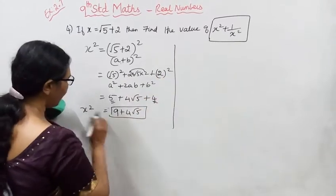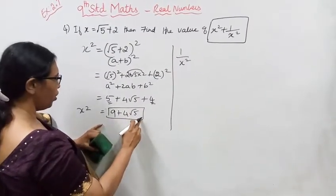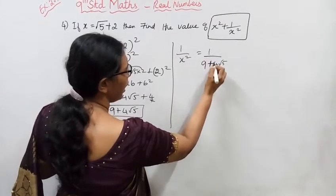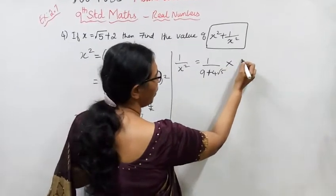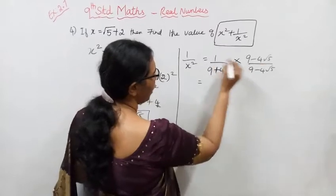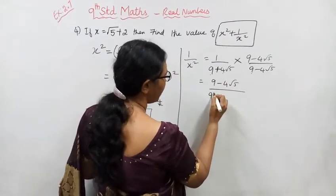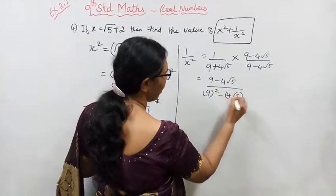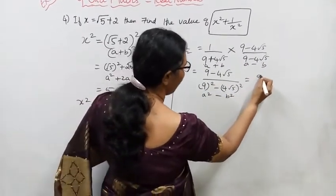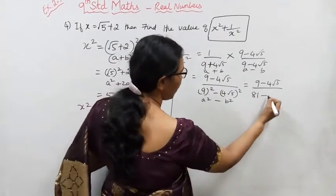Now for 1/x². We have 1/x² = 1/(9 + 4√5). To rationalize, multiply numerator and denominator by the conjugate: (9 - 4√5)/(9 - 4√5).